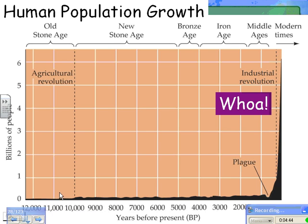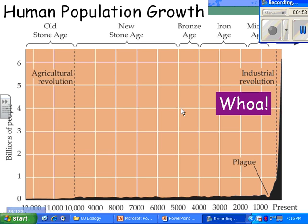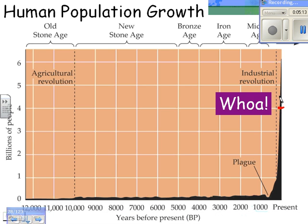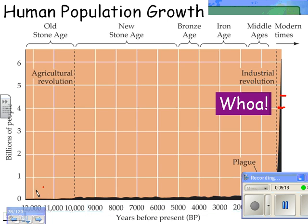You can't do population stuff without talking about people. This is a graph of the population of the planet, measured in billions of people. You can see the number of people on the planet was pretty stable for thousands and thousands of years. There were something like four to four and a half billion people when I was in high school or college. Today the number is around seven billion. So we're increasing at a pretty scary and fast rate, kind of like bacteria on a petri dish.